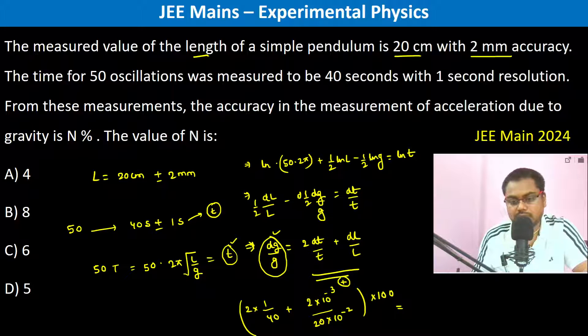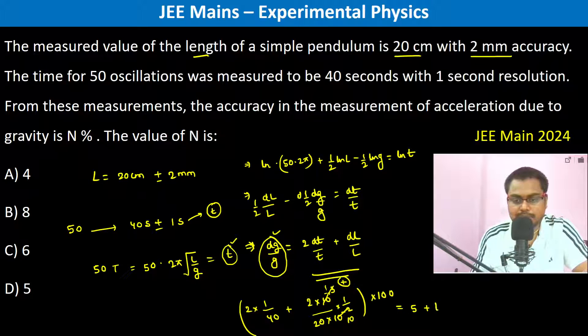Therefore it is going to be 5 plus, and it was 10 to the power minus 2, so this goes as 10 to the power minus 1. This becomes 1 by 10, so 5 plus 1, this is 6 percentage.